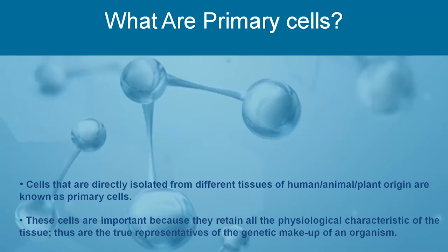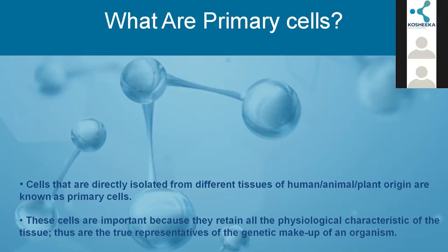Primary cells are directly isolated from tissues. Cell lines are secondary — they are isolated from tissues and grown for a finite number of times to become a continuous cell line. Primary cells are the exact mimic of the organism because they retain all the physiological and biotechnological properties of the organism. They are also the true representative of the genetic makeup of an organism.